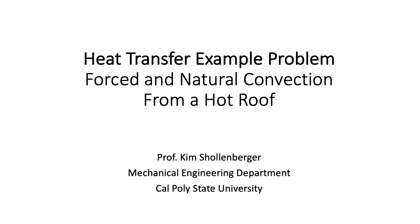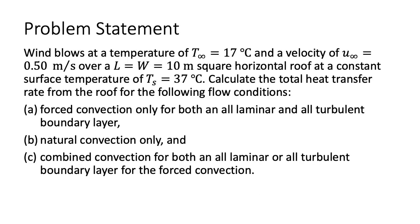Heat transfer example problem: forced and natural convection from a hot roof. Wind blows at a temperature of 17 degrees Celsius and a velocity of 0.5 meters per second, which is a little over 1 mile per hour, over a 10 meter square horizontal roof at a constant surface temperature of 37 degrees Celsius. Calculate the total heat transfer rate from the roof. For Part A, forced convection only, for both an all-laminar and an all-turbulent boundary layer.